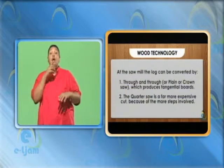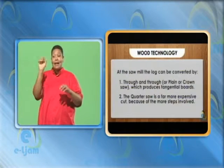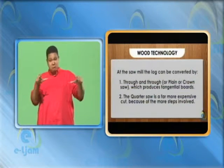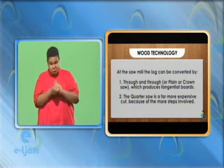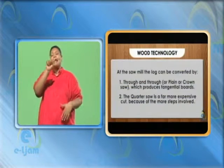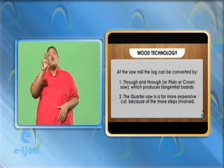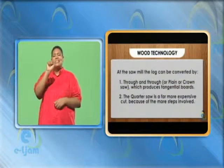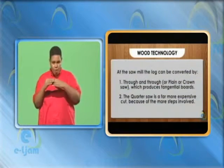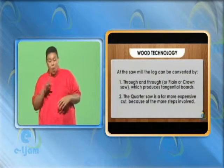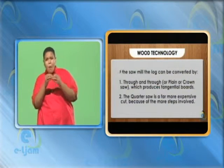At the sawmill, the log can be converted by: 1. Through and through, or plain or crown saw, which produces tangential boards. 2. The quarter saw, which is a far more expensive cut because of the more steps involved.